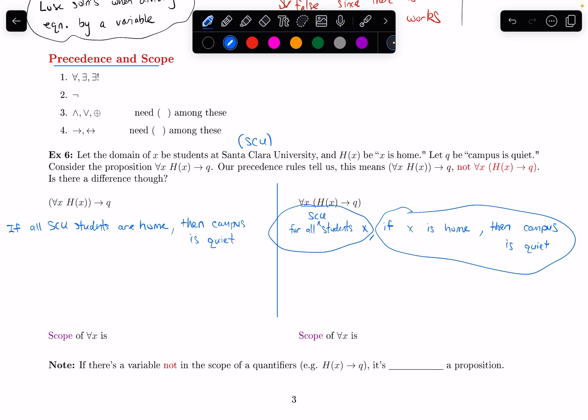So if there were 100 students at SCU, when the first student was home, campus would need to be quiet. When the second student was home, campus would need to be quiet.